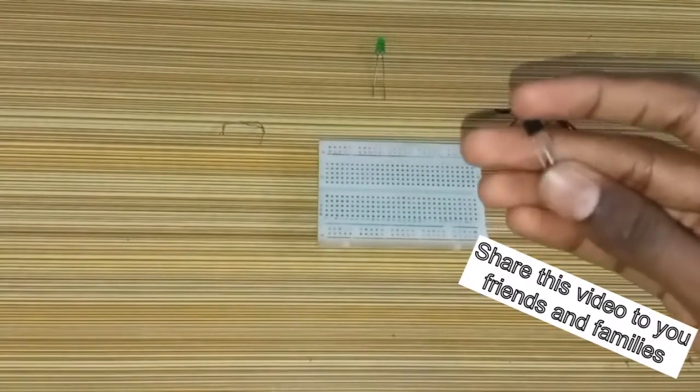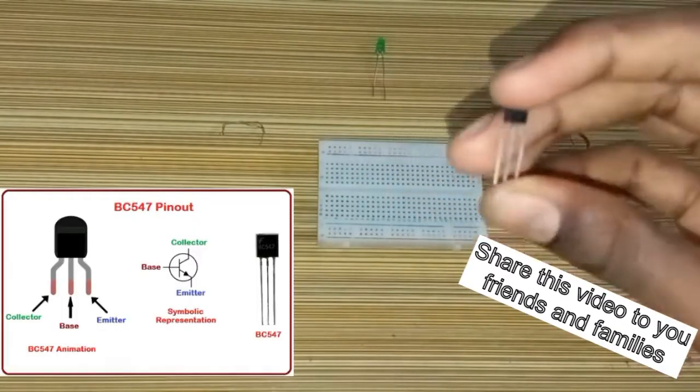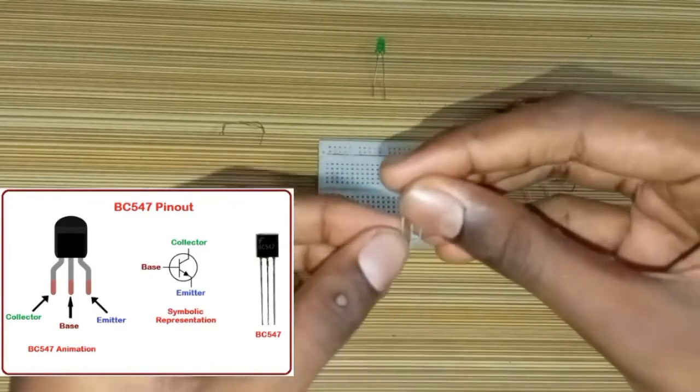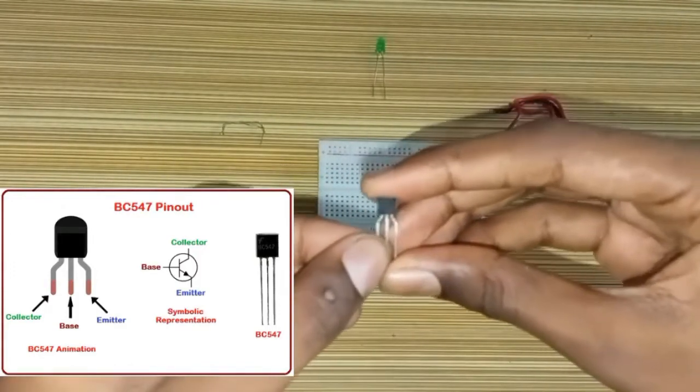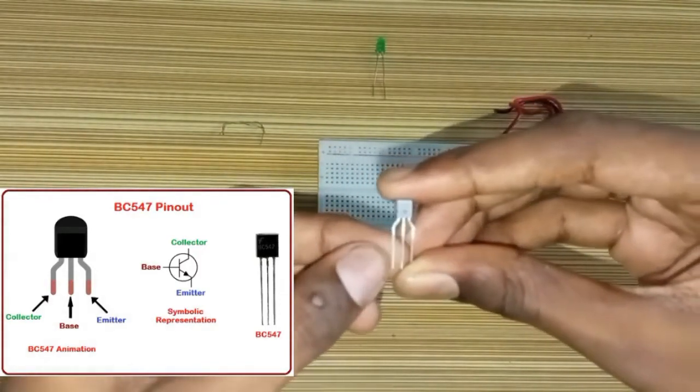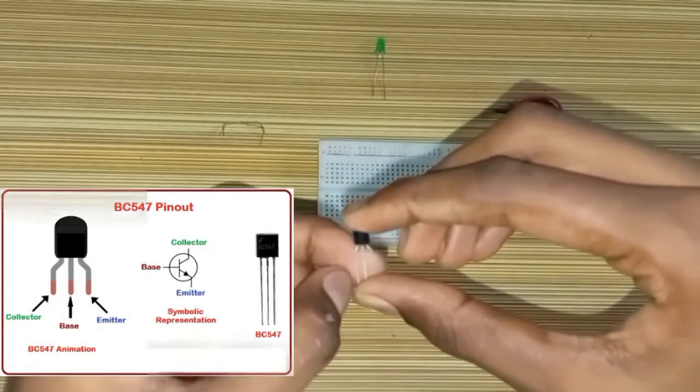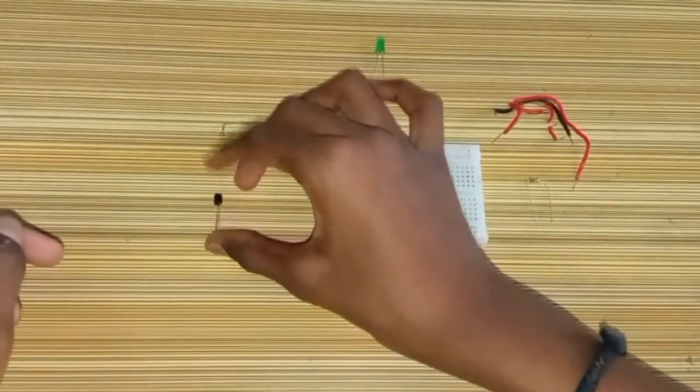Now let's look at the BC547 transistor. It has three pins: the middle pin is called the base, and the other ends are called the collector and the emitter. You can see the image here; I will provide the image link in the description and comment box.